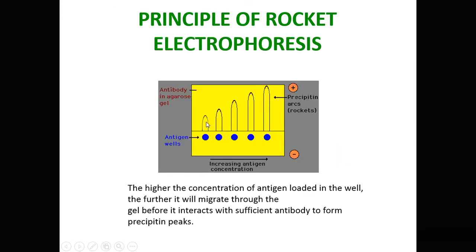The height of the rocket is proportional to the concentration of the antigen present in the well. Different heights of the rocket are shown in this figure, depicting differences in antigen concentration. The difference is seen as the height of the precipitant peaks. Higher concentration of antigen in the well means the antigen will migrate further through the gel and interact with sufficient antibody to form taller precipitant peaks.